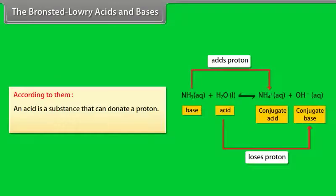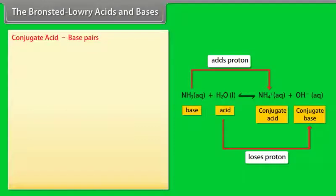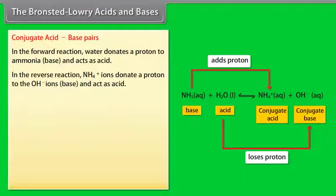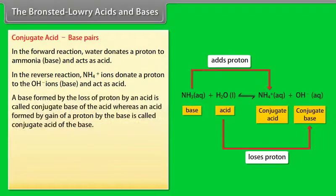The Bronsted-Lowry acids and bases: According to them, an acid is a substance that can donate a proton, and a base is a substance that can accept a proton. In the forward reaction, water donates a proton to ammonia and acts as an acid. In the reverse reaction, NH₄⁺ ions donate a proton to the OH⁻ ions and act as an acid. A base formed by the loss of a proton by an acid is called the conjugate base of the acid.